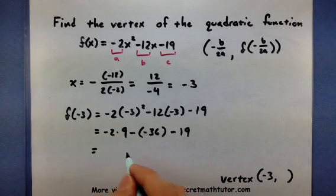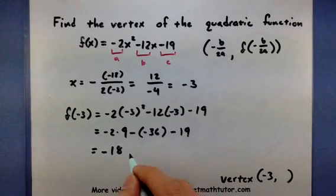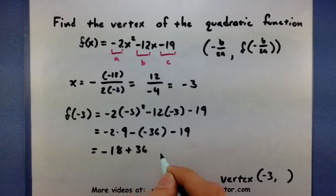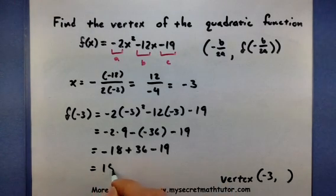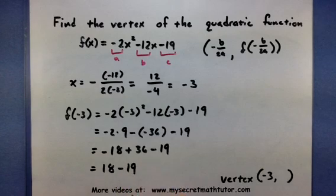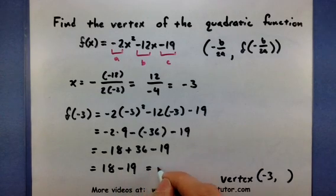Let's see, so this will be negative 18 plus 36 minus 19, and so 18 minus 19, or just a negative 1.